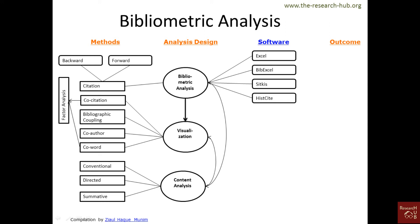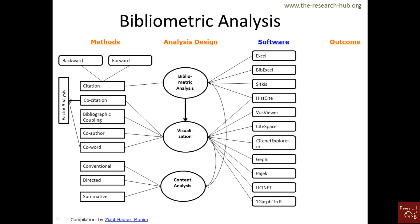For software, for simple bibliometric analysis you can use Excel, BibExcel, Sitkris, or HistCite. HistCite also provides visualization, though it is somewhat limited. You can also use VOSviewer, CiteNet, CiteSpace, CiteNet Explorer, Gephi, Pajek, UCINet, iGraph, and R — all of these provide good visualization.